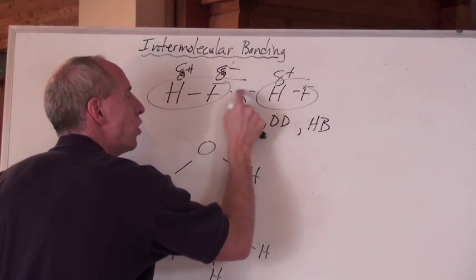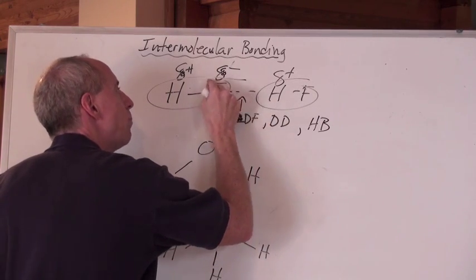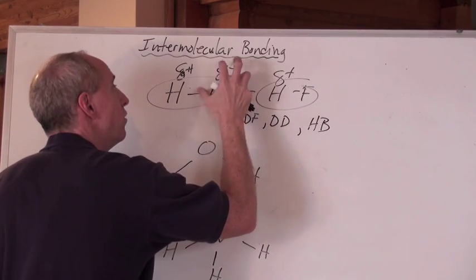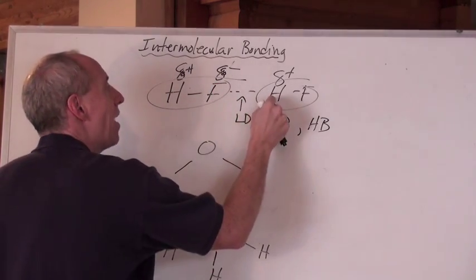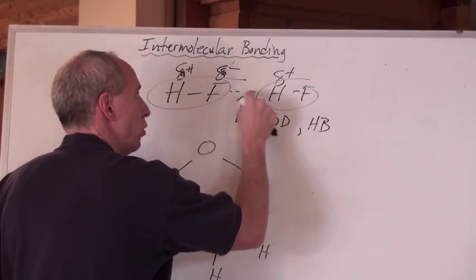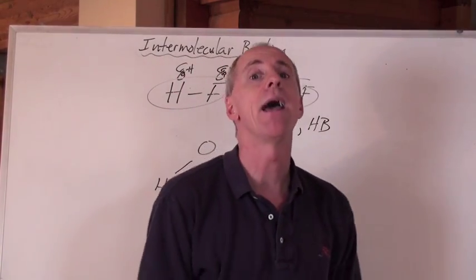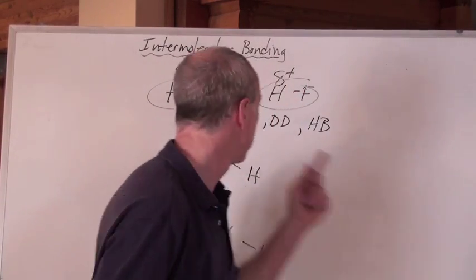A Hydrogen bond is an intermolecular bond between a partially, really partially negative element like F, O, or N, and the Hydrogen of another molecule. That's a Hydrogen bond. And boy, is that ever a strong bond.